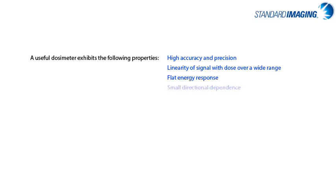These properties include high accuracy and precision — note that these two terms are not the same — linearity of signal with dose over a wide range, a relatively flat energy response, small directional dependence, high spatial resolution, and a large dynamic range. Viewers are encouraged to review the slide sets available from the IAEA, which discuss each of these properties in detail. This tutorial is focused on ion chamber and electrometer characteristics, and reference materials can be found at the end of this video.